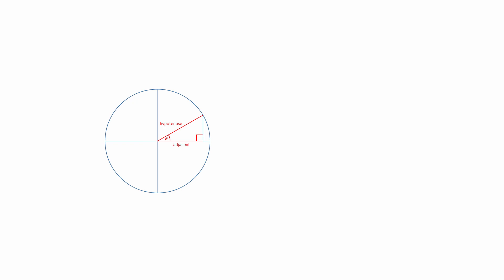Theta is the angle through which the dot has moved from its original position. The longest side of this triangle is known as the hypotenuse. Notice that the length of the hypotenuse is the same as the radius of the circle. The other side, which makes up the angle theta, is called the adjacent side, because it's next to theta. The third side, which is opposite theta, is called the opposite side.